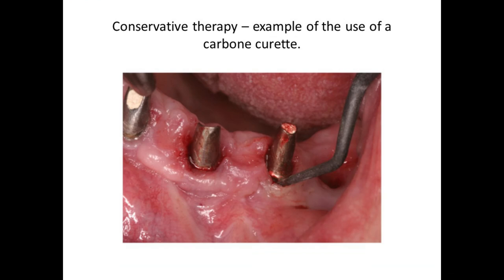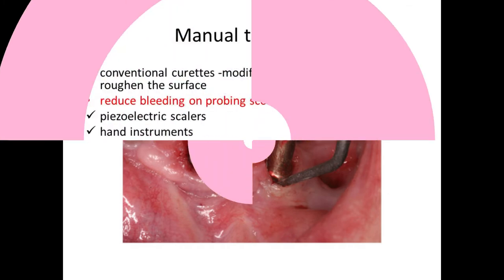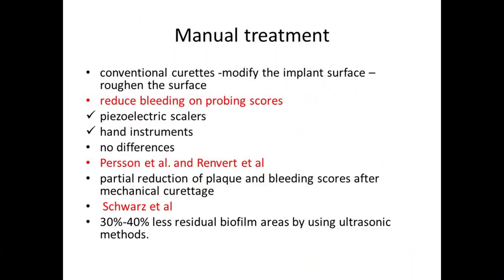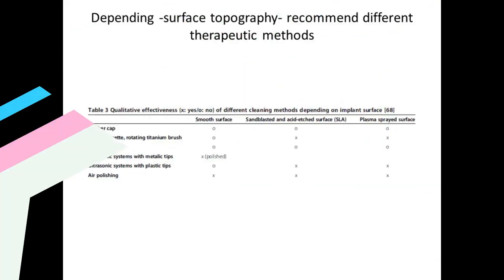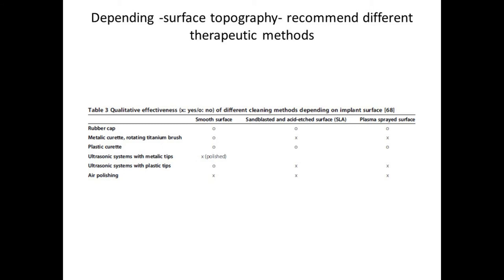This picture depicts conservative therapy — detoxification by air polishing device using glycine powder — and mechanical debridement with a carbon curette. Conventional curettes used on teeth can roughen the implant surface. Using a piezoelectric scaler or hand instruments shows not much difference. According to Persson et al. and Renvert et al., there is a partial reduction in plaque and bleeding scores after mechanical treatment, and 30–40% less residual biofilm areas by ultrasonic methods.